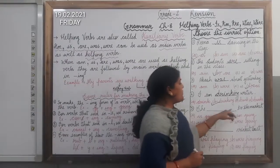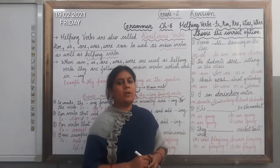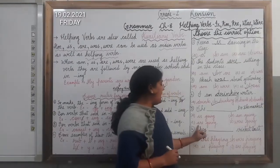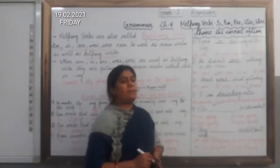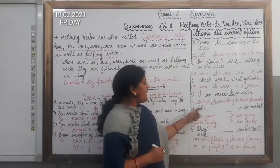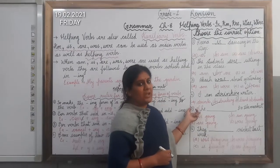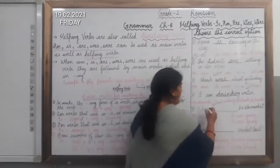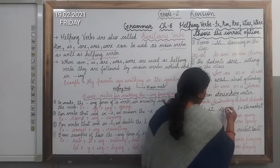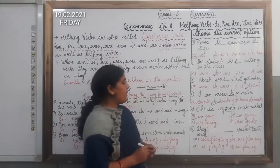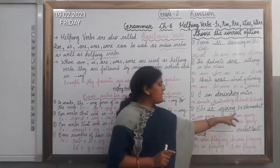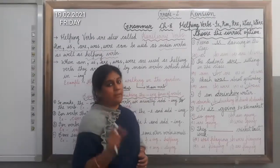Question number 5 is: She ___ to the market. Here both the helping verb and the main verb you have to select. Four options are given: A is going, B is am going, C is are going, D is were going. First you have to tell me whether this sentence is in the present tense or in the past tense. Yes, it is in the present tense. Here we are talking about the pronoun she, so which helping verb will come? Yes, we will use is. So option number A — is going — is the correct answer. The main thing you have to identify is the correct helping verb.